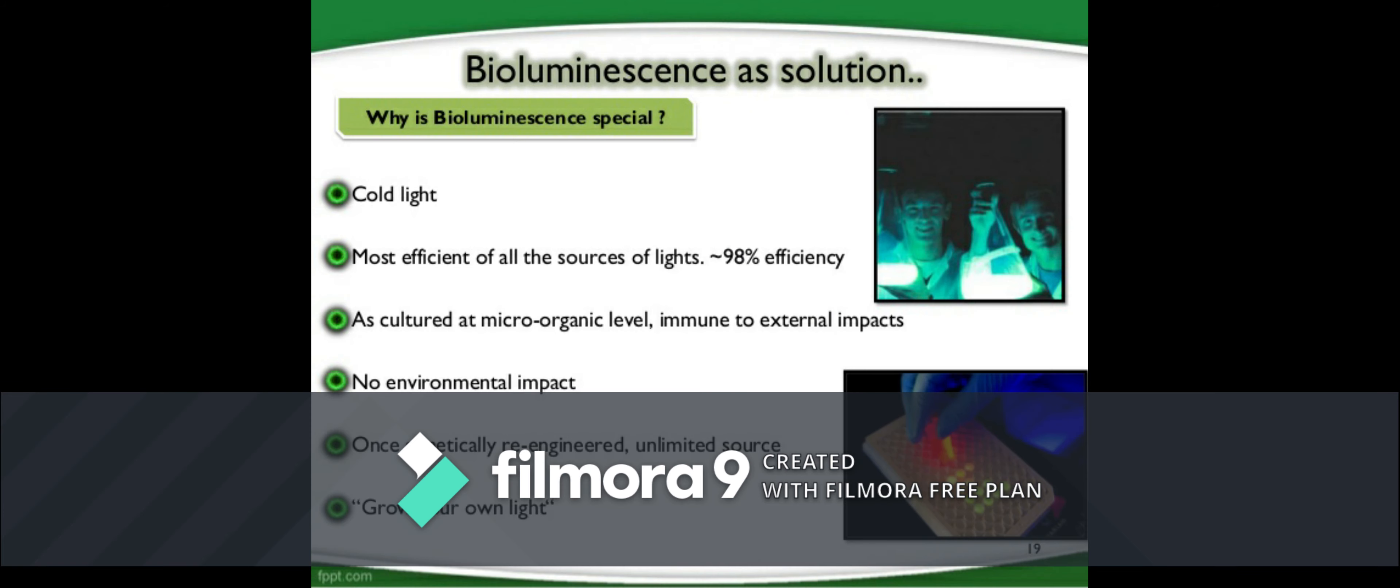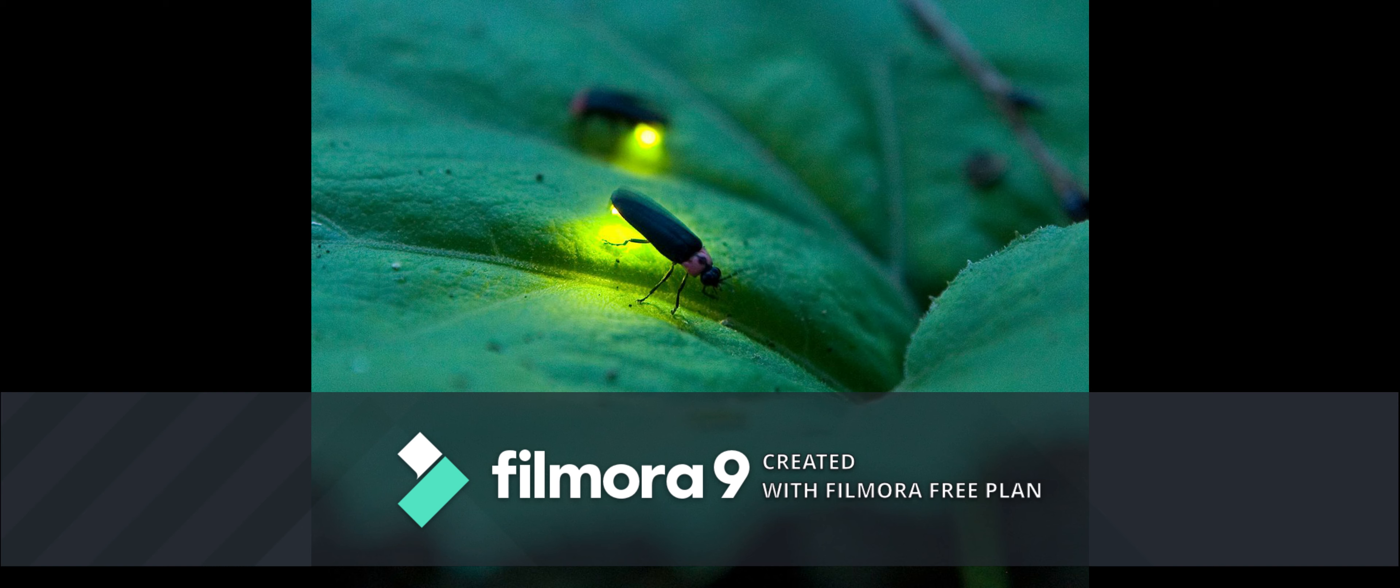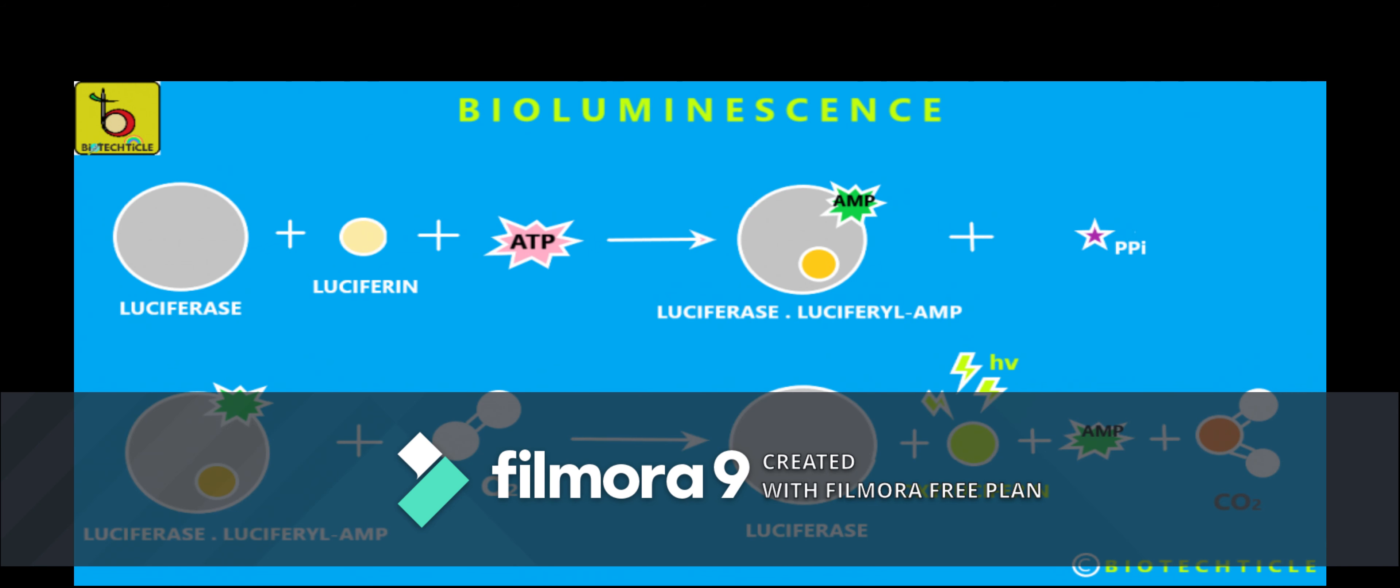The principal reaction involves the light-emitting compound named luciferin, found in the abdomen of organisms which generate bioluminescence. They undergo enzyme-catalyzed oxidation and the resulting excited state intermediates emit light upon decaying to their ground state. The reaction takes place in the presence of ATP, that is adenosine triphosphate.